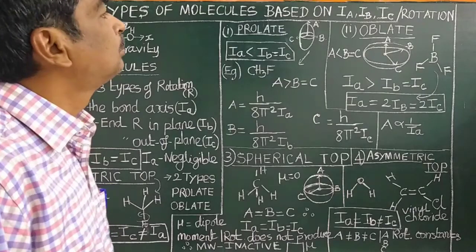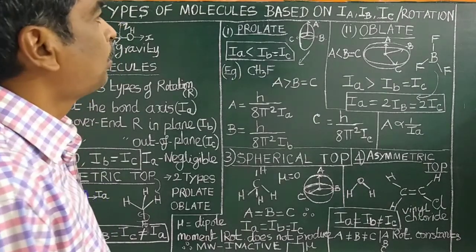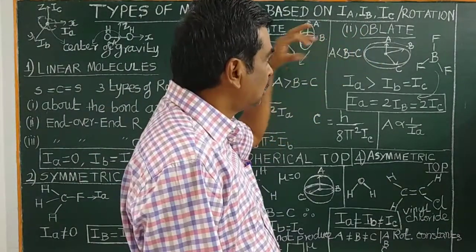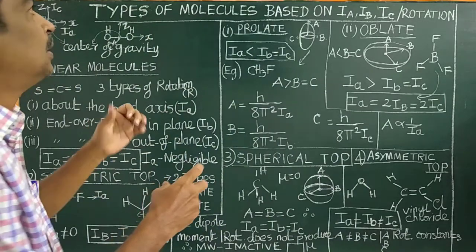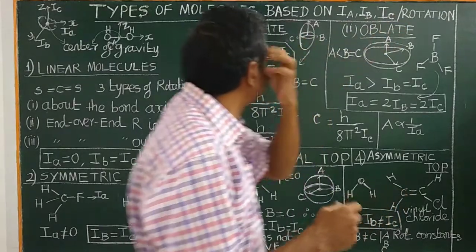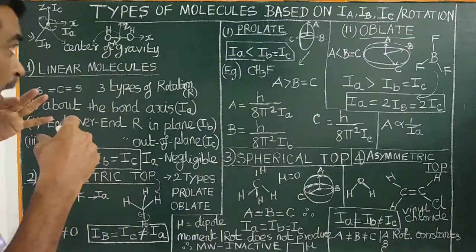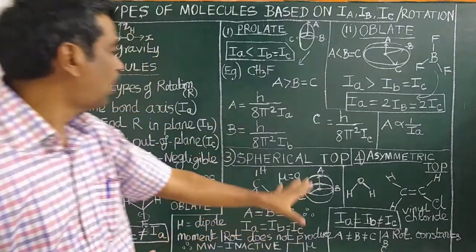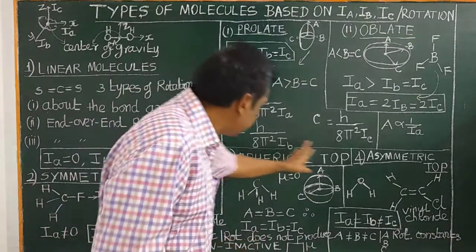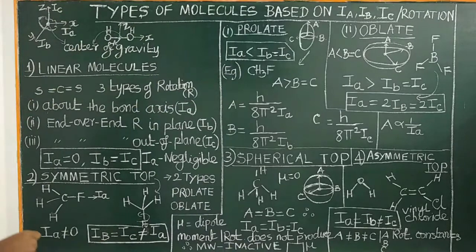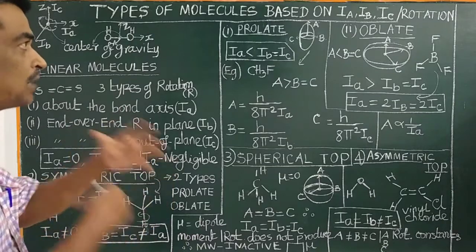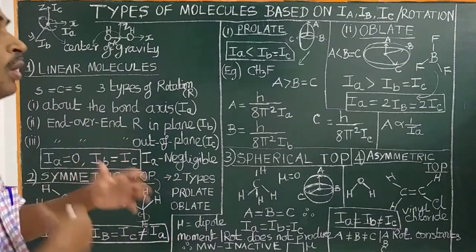Good morning! I am going to talk about classification of molecules based on rotation, around rotational axes or principal moments of inertia Ia, Ib, Ic. At the base, there are four types of molecules: linear molecules, symmetric top, spherical tops, and asymmetric tops. Molecules are classified based on their rotational properties or rotational behavior.